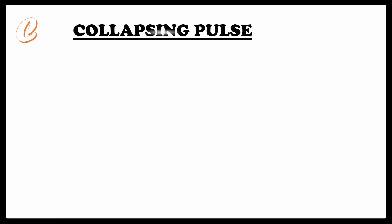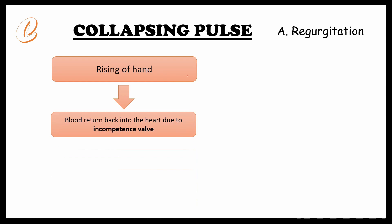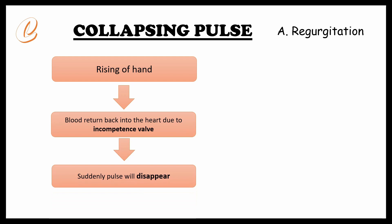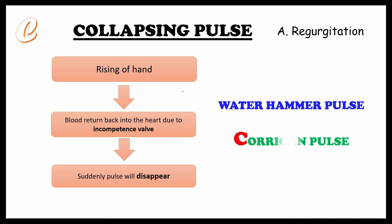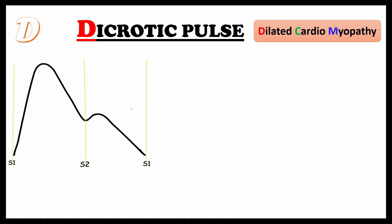Next comes C — collapsing pulse, which happens in aortic regurgitation. During examination, if we ask the patient to raise their arm, the pulse may disappear, because raising the arm leads to blood returning back into the heart due to the incompetent valve, causing sudden disappearance of the pulse. This is also called water hammer pulse or Corrigan pulse — C stands for Corrigan pulse.